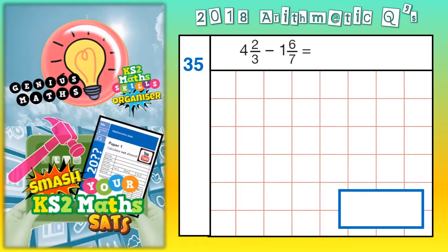Welcome, Arithmetic Tick Ninjas, to question 35. Now this is quite a tricky one because we've got mixed numbers with different denominators. So the first thing we need to do is make a common denominator.